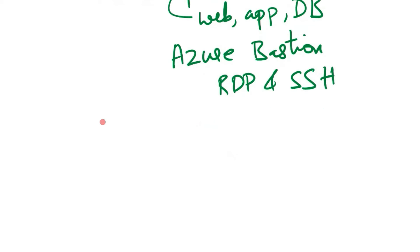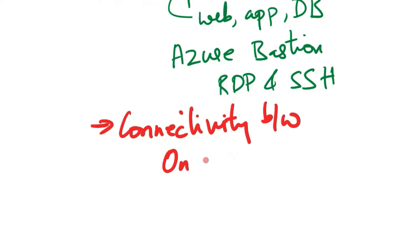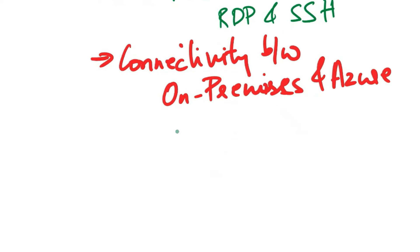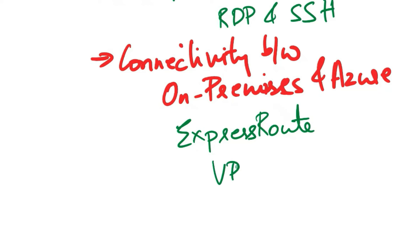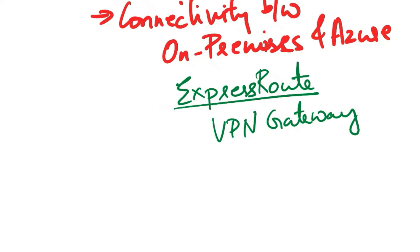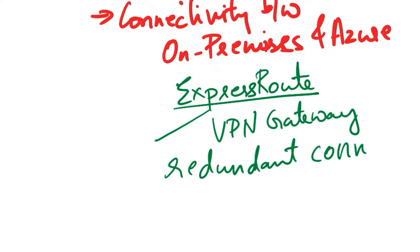The next consideration is connectivity between on-premises and Azure. Use Azure ExpressRoute or VPN Gateway to establish connectivity between your on-premises data center and Azure. ExpressRoute provides a dedicated private connection with higher reliability and lower latency compared to VPN. Implement redundant connections for high availability.